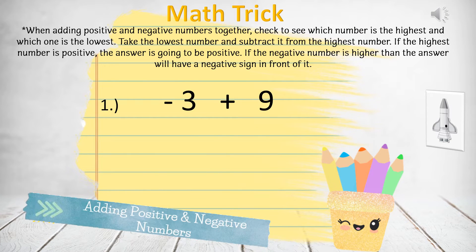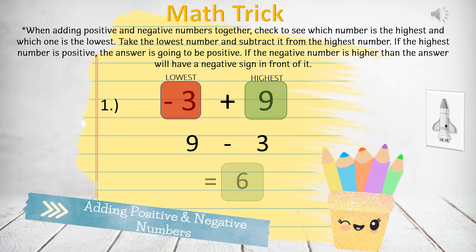Question number 1: negative 3 plus 9. 9 is the highest and 3 is the lowest. Subtract the lowest from the highest and we get 9 minus 3. The answer is 6, and since 9 was a positive number, the answer is also positive.